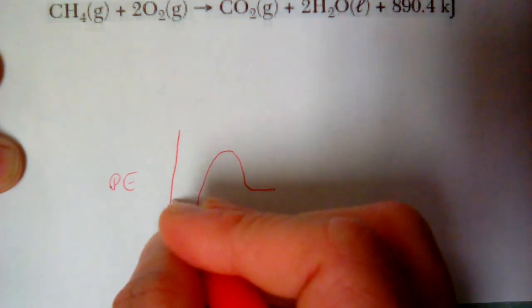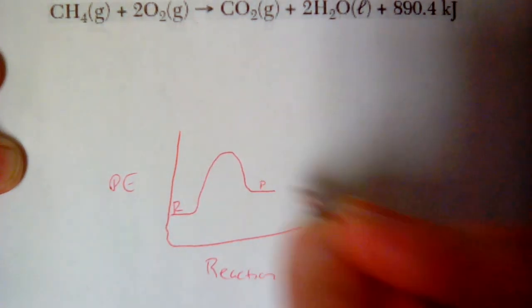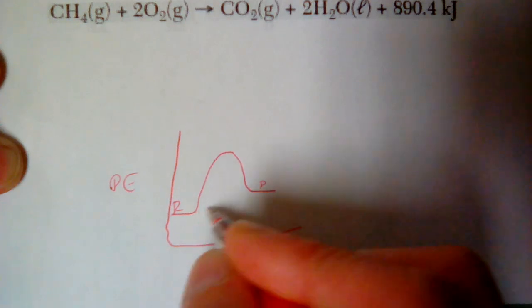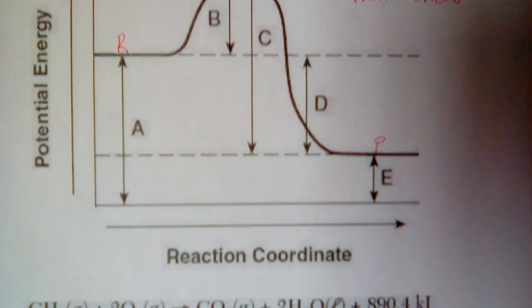And again, your reactants are always on the left because that's what you start with. And your products are over here on the right. And as you can see in this case, we're going up. If we were going uphill, the reactants are lower than the products. Then it would be endothermic.